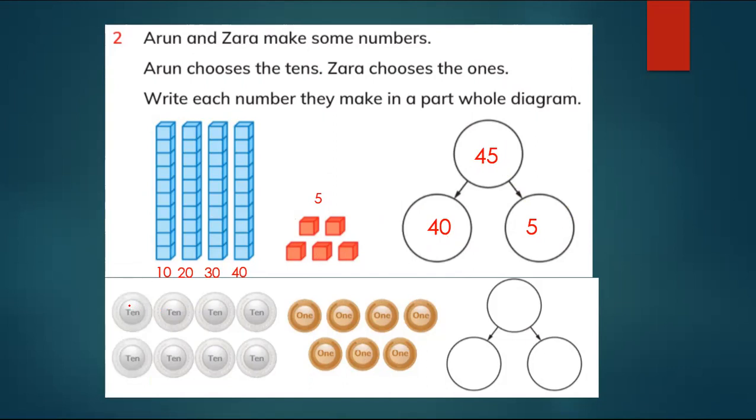Here is 10, 10, 20, 30, 40, 50, 60, 70, 80. So here are 80 tens. So we have to put them because tens have got one zero.